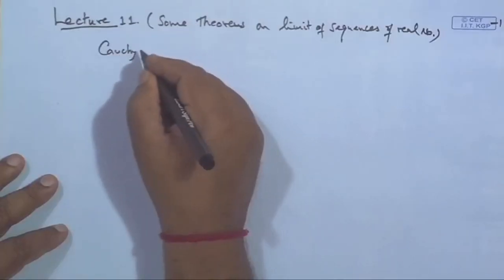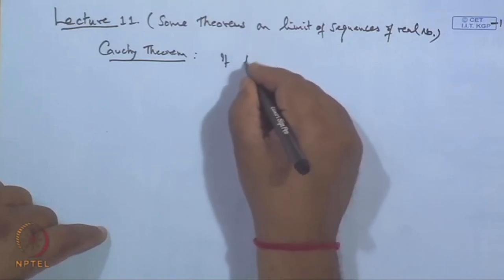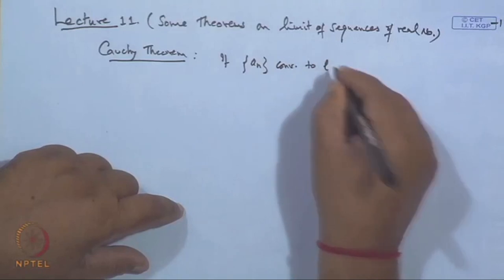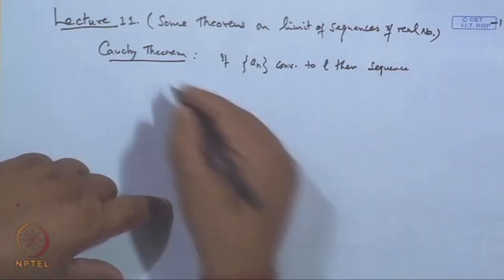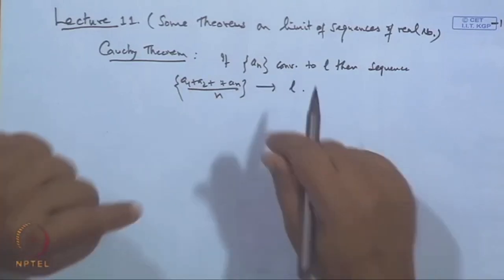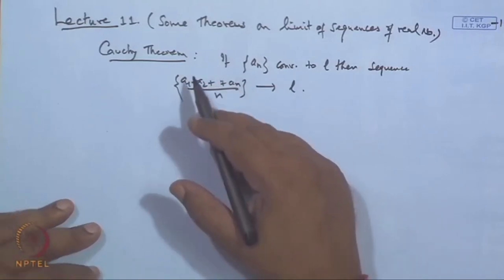In the last lecture, we discussed a few theorems — Cauchy's theorem of the first kind and Cauchy's theorem of the second kind — where we developed some results which will help in getting the limit of the sequence a_n. Cauchy's theorem states that if the sequence a_n of real numbers converges to L, then the sequence (a_1 + a_2 + ... + a_n)/n will also converge to the same limit L. This means a sequence converging to L implies the convergence of the sequence of their arithmetic means.